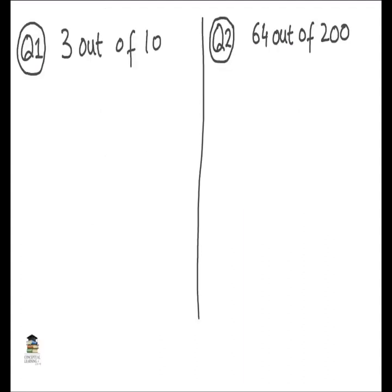Now we have two questions. One is 3 out of 10 and the second one is 64 out of 200. In these two questions, percentage is not provided and we have to calculate the percentage of 3 out of 10 and the percentage of 64 out of 200. We can solve the first one: 3 out of 10. You write down 3, then a fraction line, then write 10 — which means 3 out of 10. Because percentage is not provided, if you multiply by 100, you can calculate the percentage.